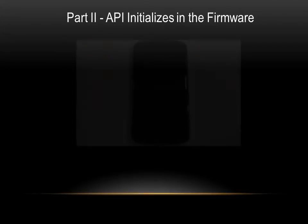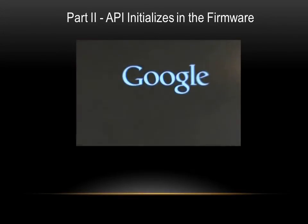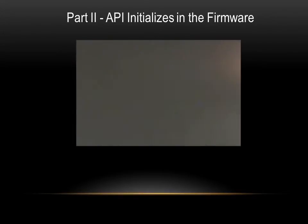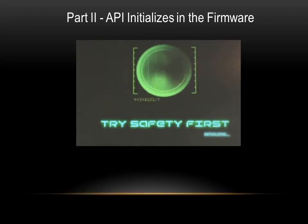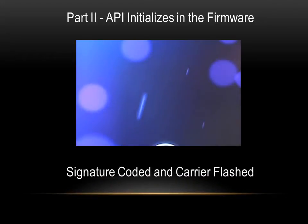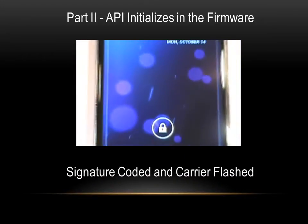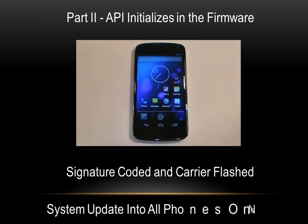Here in Part 2, as I power on the phone you will see the green TriSafety First API icon as the protocol software initializes. This API firmware will be signature coded and carrier flashed as a system update into all phones operating across all networks.